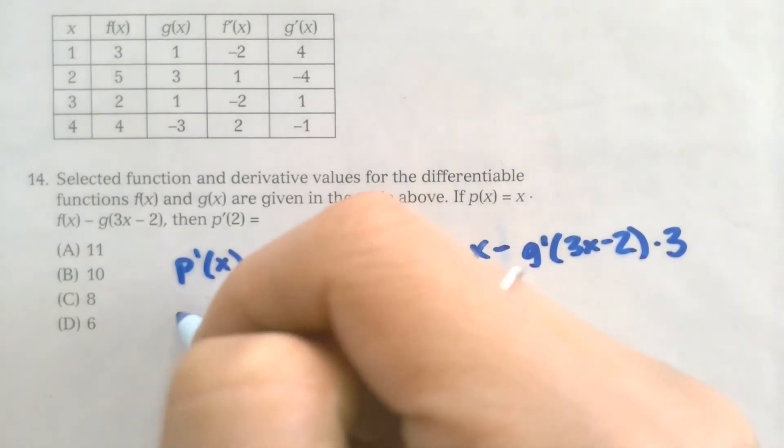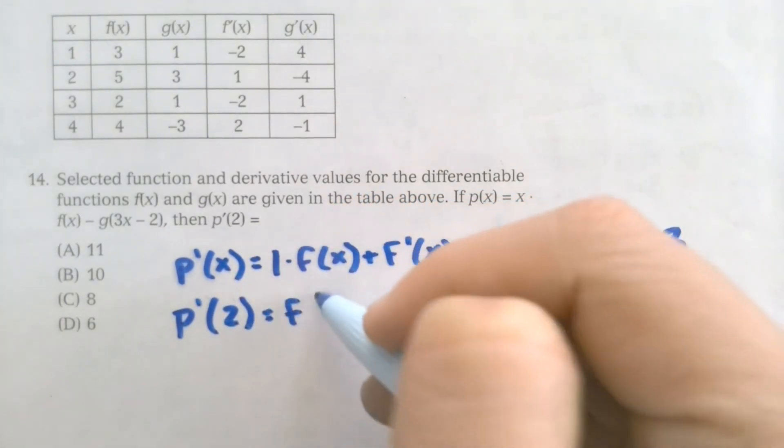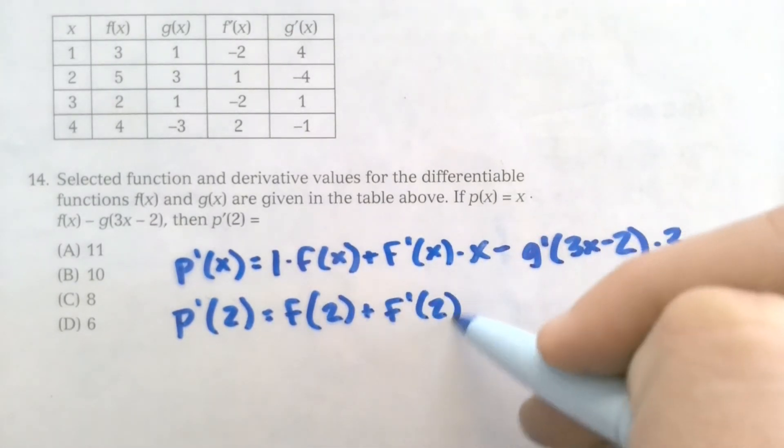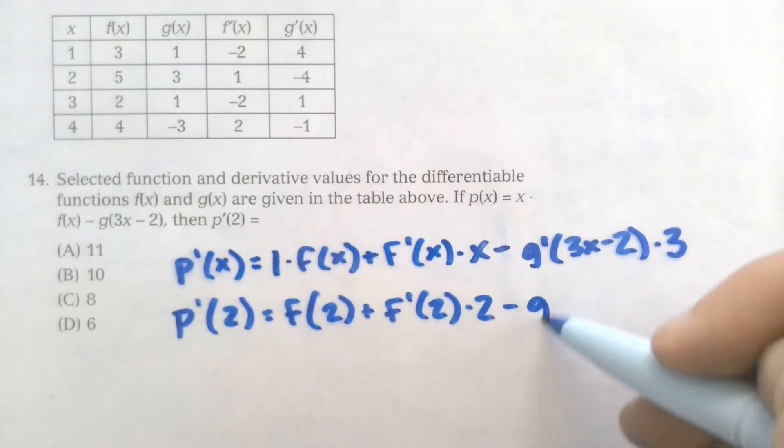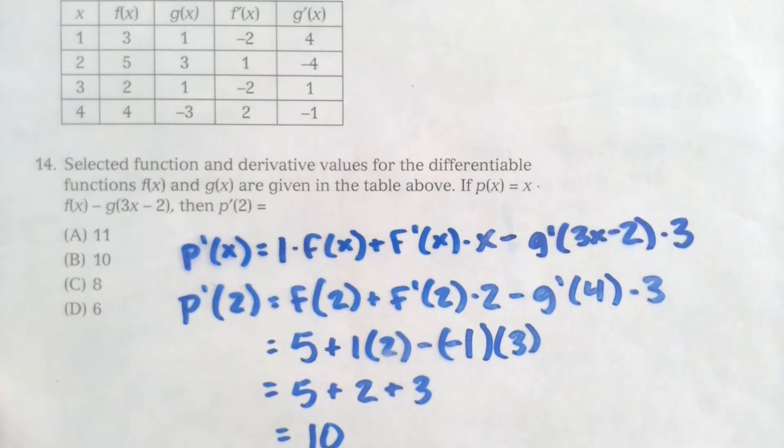So that was the challenging part. Now you're just plugging in for p prime of 2. I'm plugging in 2 for all of my x values. And then be really careful that you're checking for the right thing in the chart. And let's see, this is going to be 6 minus 2, so 4. And then that you're doing proper arithmetic. After all of the plugging in, simplifying, you should get 10.